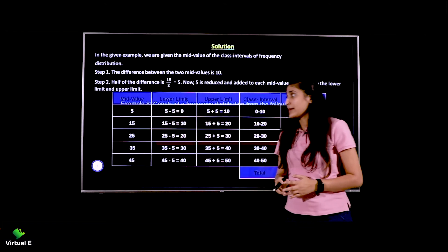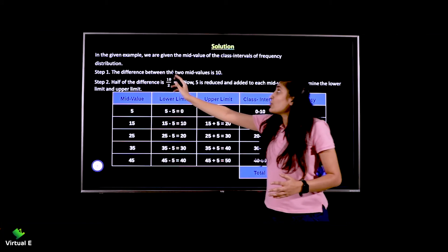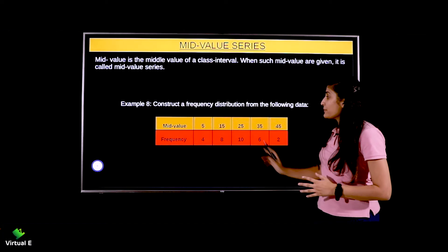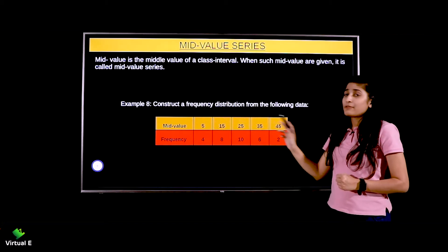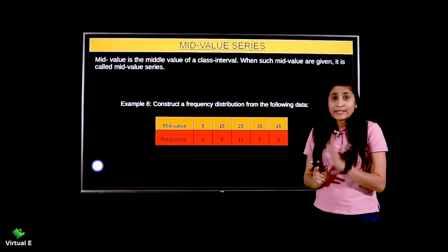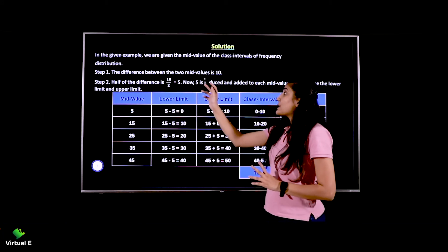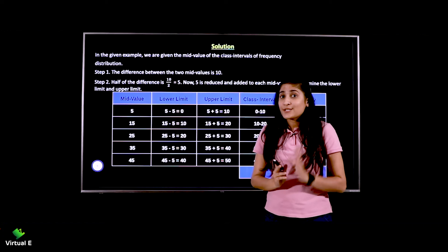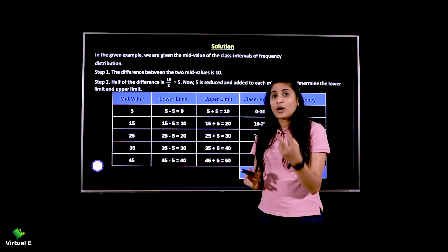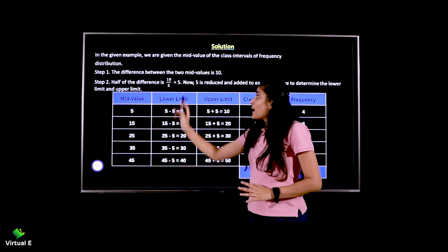To form the class, the first step is to find the difference between two mid values. In this question, the mid values are 5, 15, 25, 35, 45 — the difference between them is 10. So the first step is to find the difference between two consecutive mid values, which is 10. Next, to form the class, we do 10 divided by 2, because both the upper limit and lower limit are missing.